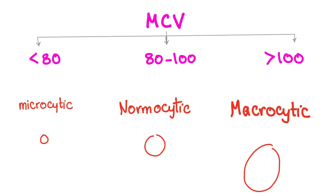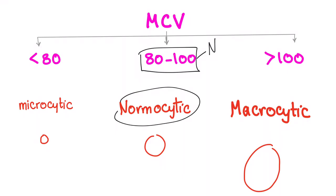So what's the difference? Let's say you have a patient and you measure the MCV — it's 80 to 100. It can be a normal patient or a patient with normocytic anemia. The normal patient has normal RBC count, normal hemoglobin, and hematocrit. The normocytic anemia patient has decreased RBC count, decreased hemoglobin, and decreased hematocrit.